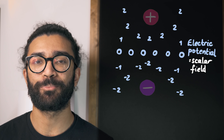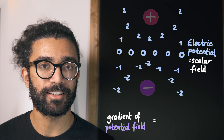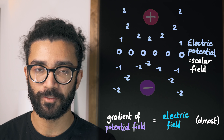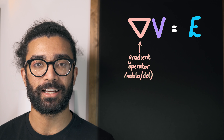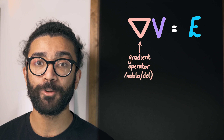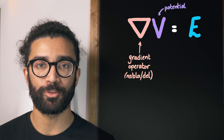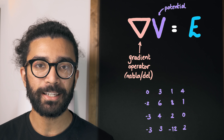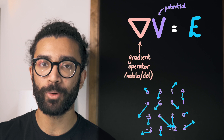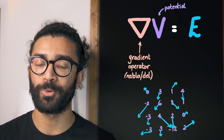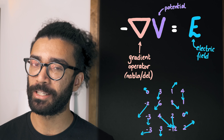Charged objects move in the direction that the potential field changes the quickest. If we find the gradient of the potential field, that basically ends up being the electric field. When I say finding the gradient of the potential field, I mean applying a gradient operator — an upside-down triangle known as a nabla or a del. When we apply this nabla operator to our potential field, we're finding the direction in which the potential field changes the quickest, as well as how quickly it changes. The quicker this field changes, the larger the vector we can assign to it — and that vector is the electric field. Technically, the electric field is defined as minus the gradient of the potential field.